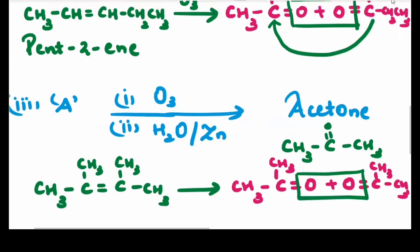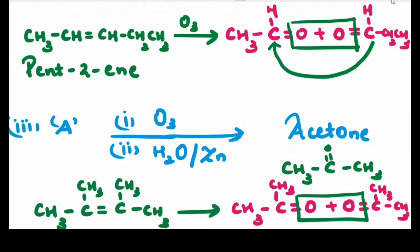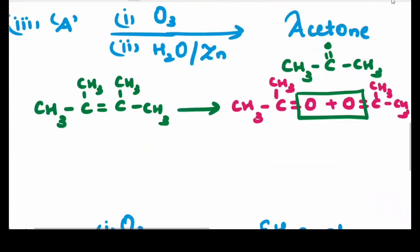Remember in the previous video I have already explained the trick for ozonolysis. If the carbon atom containing double bond has a hydrogen, the product will be aldehyde. If it does not have any hydrogen, then the product will be ketone.